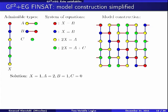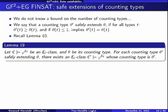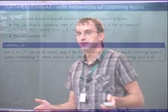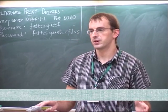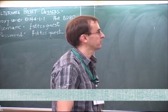This approach can be easily generalized: if we have more than two equivalence relations, we simply construct multi-dimensional grids in this way. The problem is that we do not know a bound on the number of counting types — this may be infinite, giving infinitely many variables, which would be a problem.